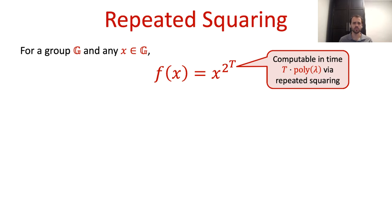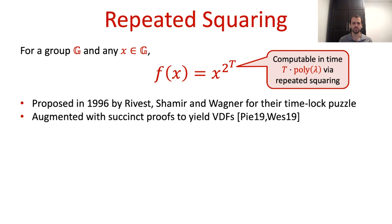Note that if the group operation is computable in time polynomial in the security parameter lambda, then this function is indeed computable in time t times poly(lambda) by t repeated squarings. Unlike the iterated hashing function, this function does have sufficient structure to enable extensions to timelock puzzles and to VDFs. Indeed, it was first proposed by Rivest, Shamir, and Wagner as the basis for their timelock puzzle, and it was recently augmented with succinct proofs yielding efficient VDF constructions.